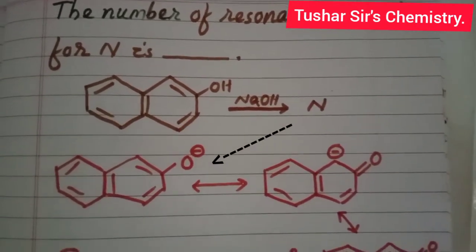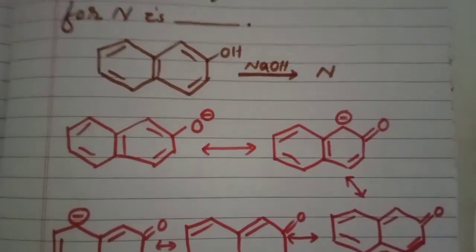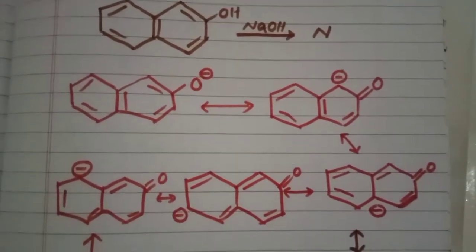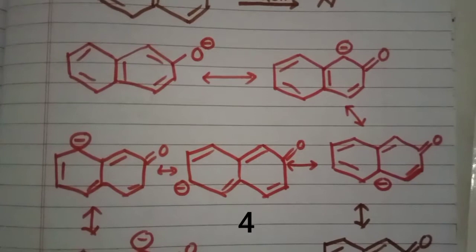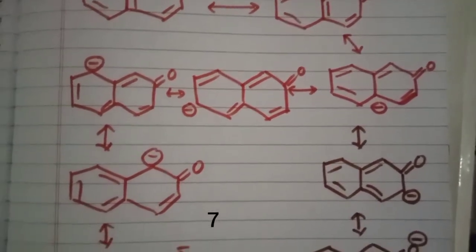N will have nine resonating structures. Let us see the resonating structures drawn on the screen: number one, number two, number three, number four, number five, number six, number seven.